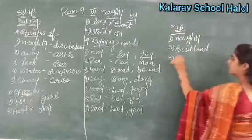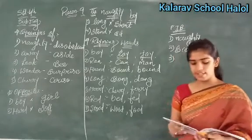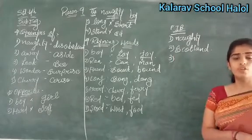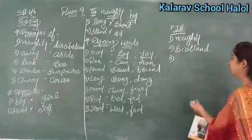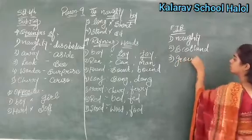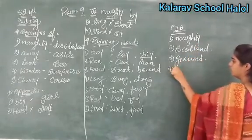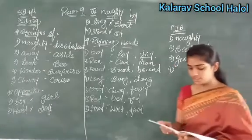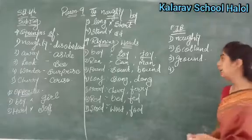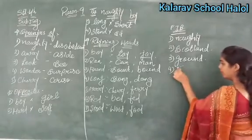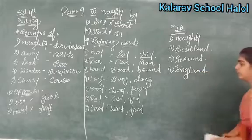Now see the third number: 'He found the dash was very hard.' What was very hard according to the naughty boy? The ground was very hard. So in the third number, you will write: ground. In the last, fourth number, see what is given: 'The boy was from dash.' So he was from England. He came from England, right? Yes. So in the fourth number, you will write: England. Okay?